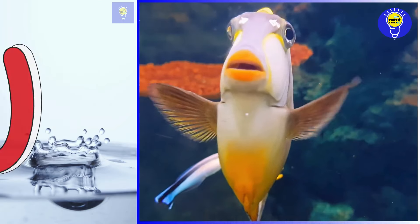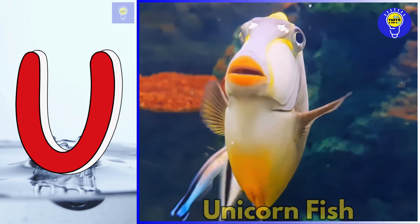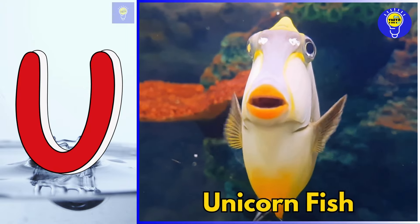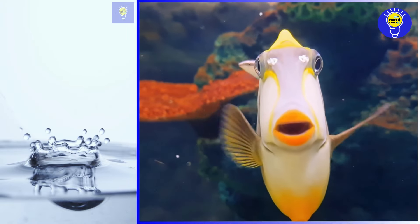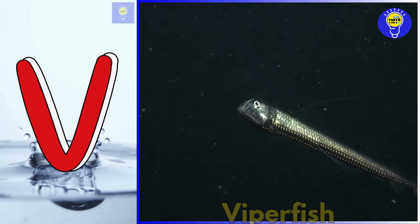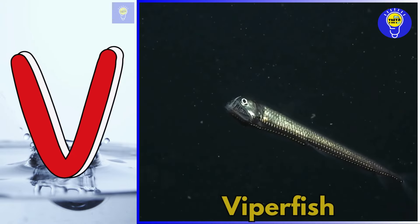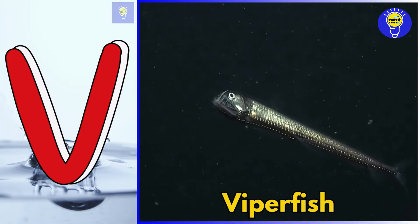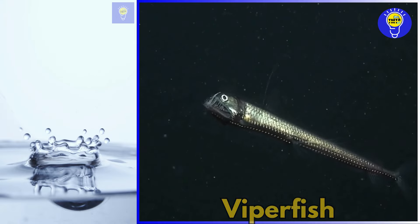U is for unicorn fish. U, U, unicorn fish. V is for viperfish. V, V, viperfish.